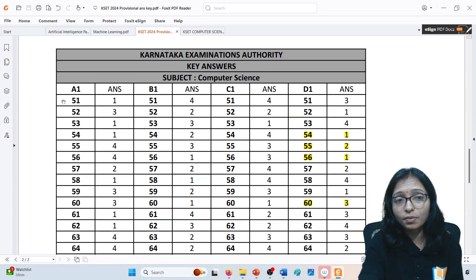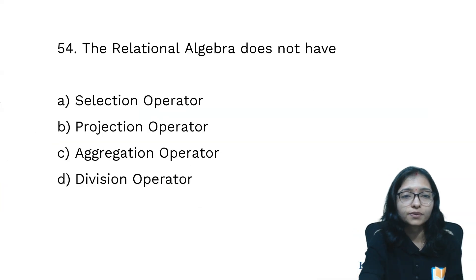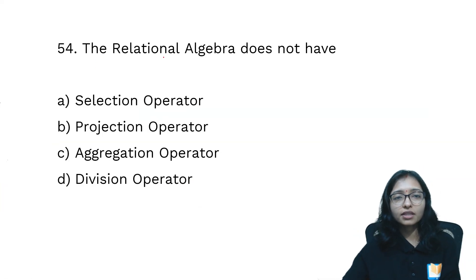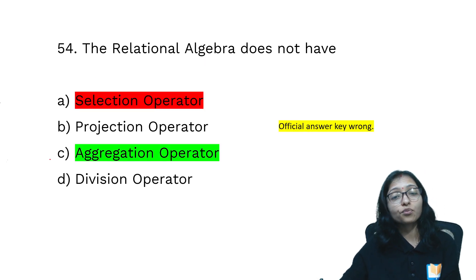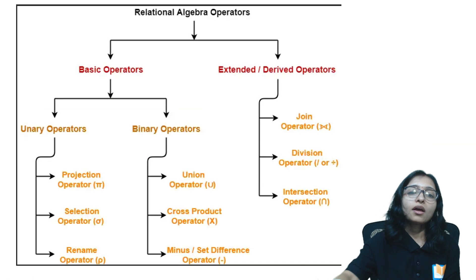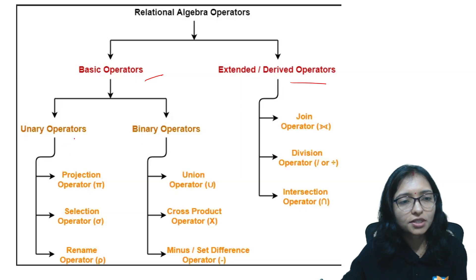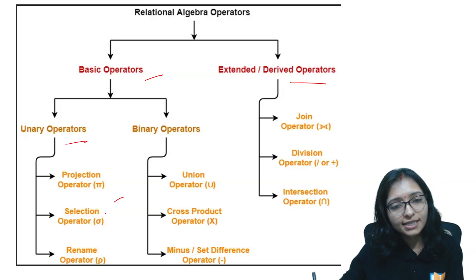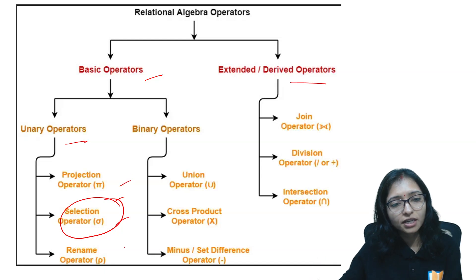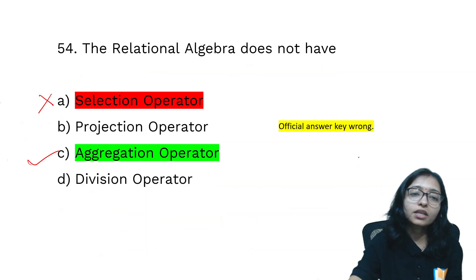According to your question paper, you have to find out whatever set your question paper is. These answers are wrong — that is 100% sure. Question 54 states that relational algebra does not have which operator. The official answer key says 'select operation,' but the correct answer is 'aggregation operator.' In relational algebra, the basic operations include unary operators: selection, projection, rename, union, cross, set difference, join, division, and intersection.